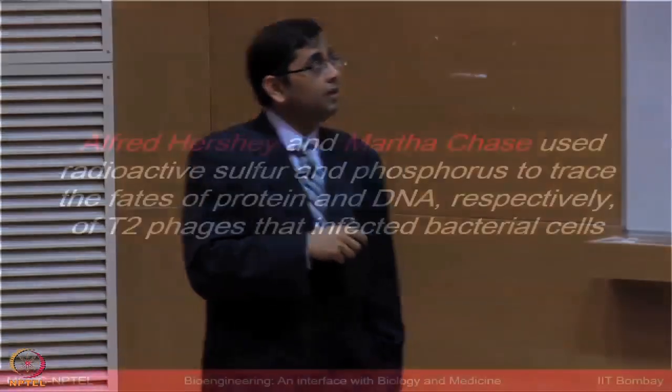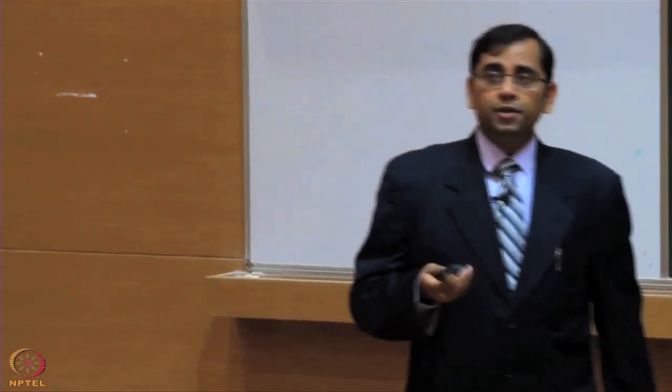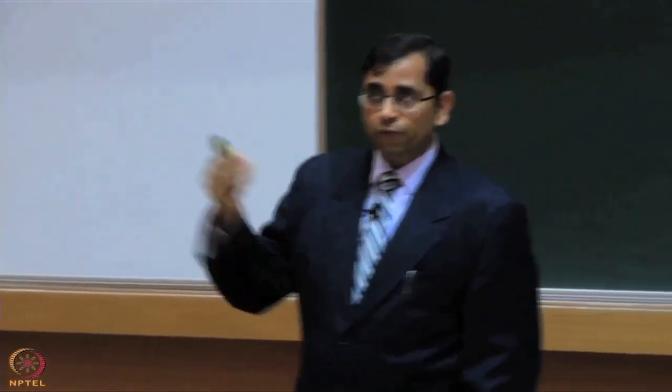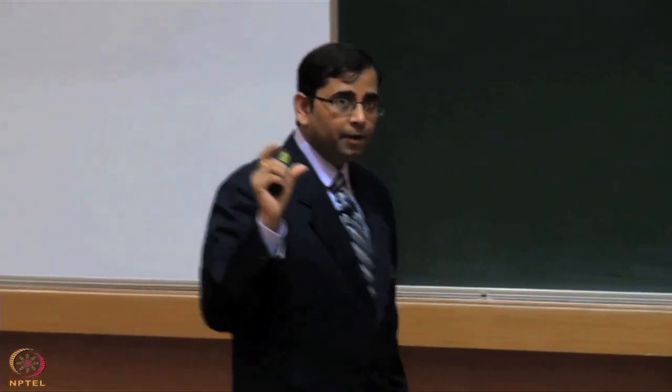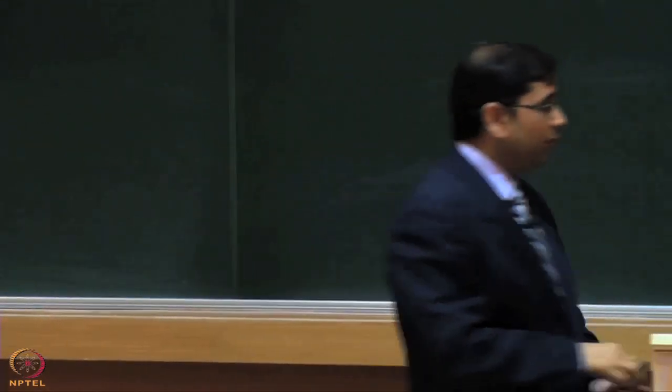These are the two scientists, Hershey and Chase. You remember we discussed that one could use some labels to track these molecules. In the 1950s, most experiments were done very elegantly by using basic reagents and labeling strategies, looking at radioactivity. You can label DNA because you have the phosphorus backbone in DNA - with 32P you can label DNA. Or you can label protein with methionine residues - with sulfur you can label proteins. They used that property.